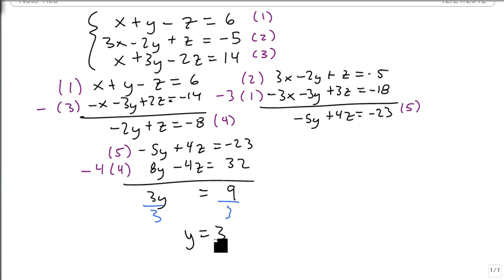So we're one-third of the way done. Now we just need to go back and solve for z in equation four. So minus 2 times 3 plus z equals minus 8. So minus 6 plus z equals minus 8. Add 6 to both sides and get z is minus 2.